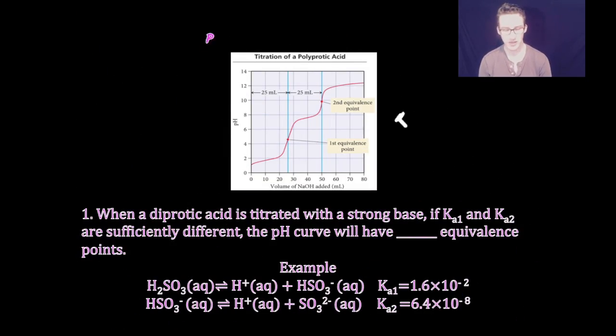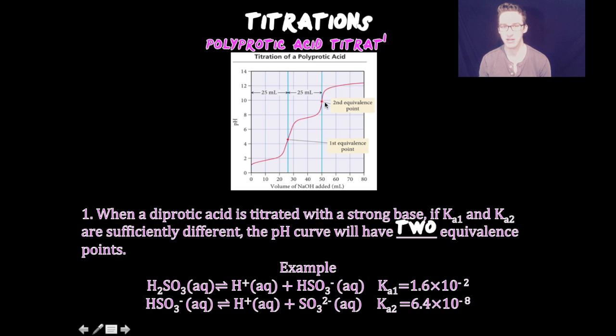That brings us to polyprotic acid titration curves. We're talking about ionizing not one, but two or more hydrogen ions. When you titrate a diprotic acid with a strong base, if Ka₁ and Ka₂ are sufficiently different, you'll get two equivalence points. The first shows the ionization of the first hydrogen ion, and the second shows ionization of the second.